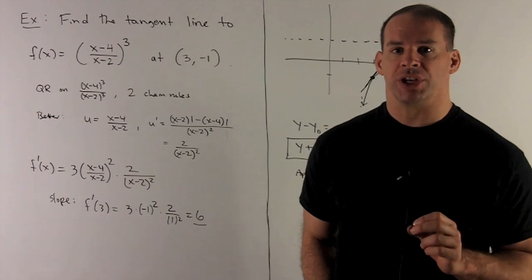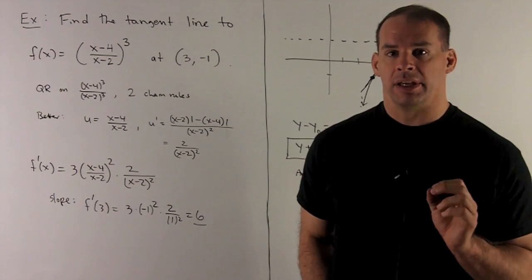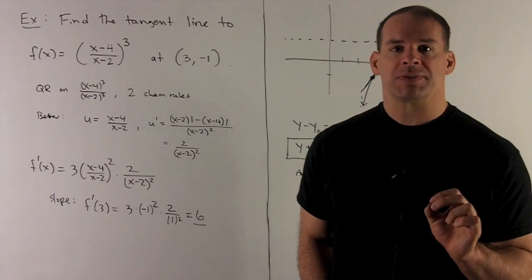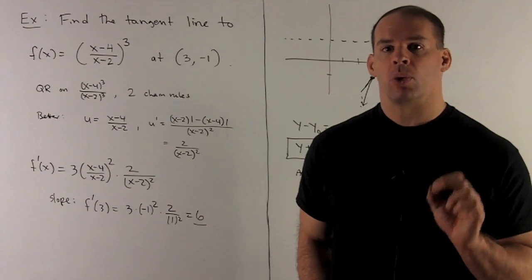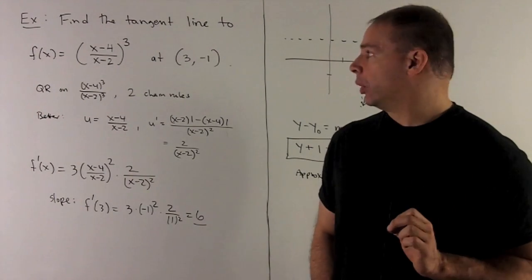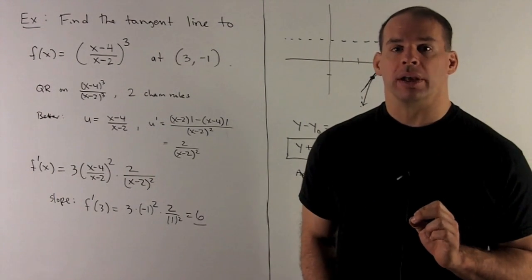Find a tangent line to the function f of x equal to x minus 4 over x minus 2 quantity cubed at the point 3 comma minus 1.